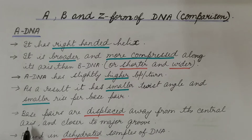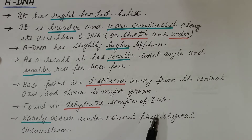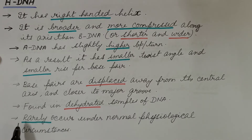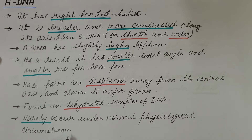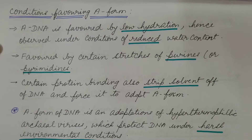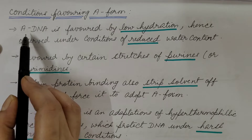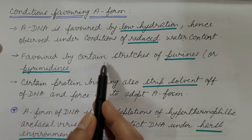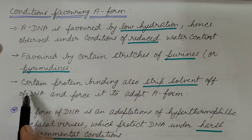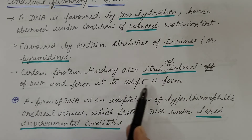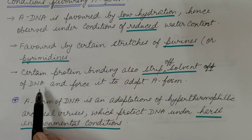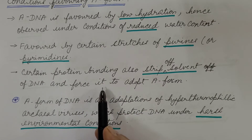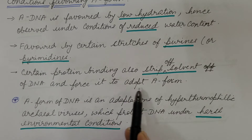Base pairs are displaced away from the central axis and are closer to the major groove. A-DNA is found in dehydrated samples of DNA, that is when there is a reduction in water content, and it rarely occurs under normal physiological circumstances — under those conditions, B-DNA is favoured. A-DNA is favoured by low hydration and is observed under conditions of reduced water content. It is also favoured by certain stretches of purines or pyrimidines.